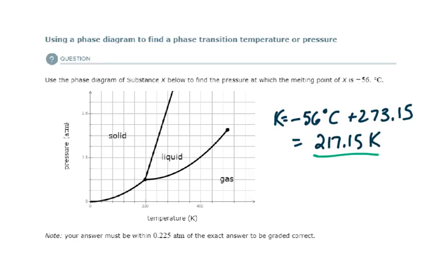All right, so they want us to figure out the pressure at which the melting point of X is negative 56 degrees Celsius, and I've already converted that to Kelvin here.